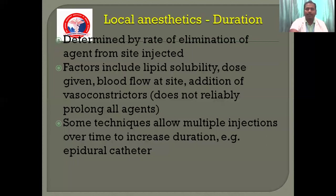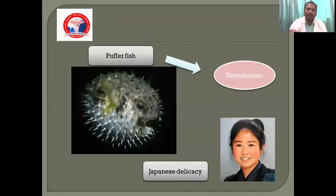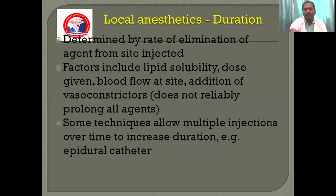The duration is mainly determined by the rate of elimination of the agent from the site of injection. Factors include lipid solubility, dose given, blood flow at the site, and addition of vasoconstrictors. Adding vasoconstrictors will increase the duration of local anaesthetics.